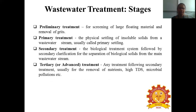Preliminary treatment is the screening of large floating material and the removal of grit material like sand and silt present in the wastewater. If they are not removed in this preliminary process, they will cause huge damage to the different devices, treatment units, and pumps used in the different levels of wastewater treatment.